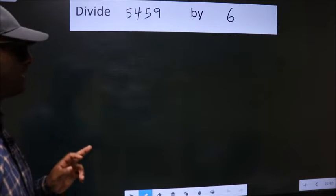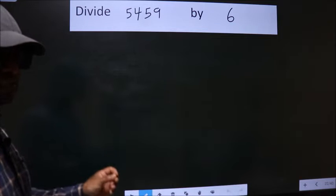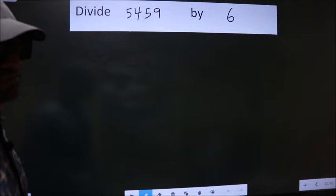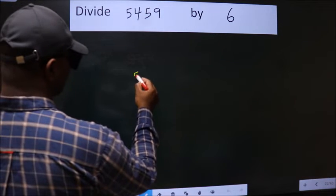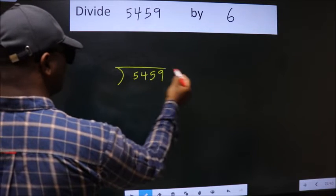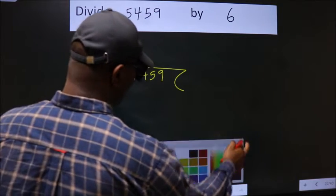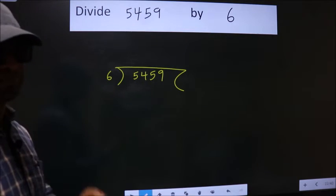Divide 5459 by 6. To do this division, we should frame it in this way. 5459 here, 6 here. This is your step 1.